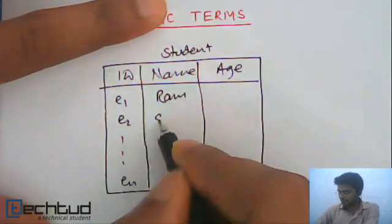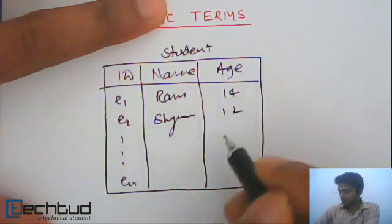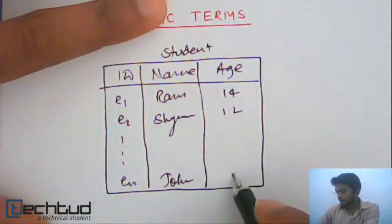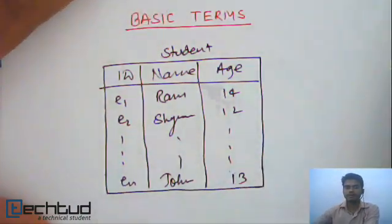Ram, 14, Shyam, 12, John, 13. So this is a database of students.